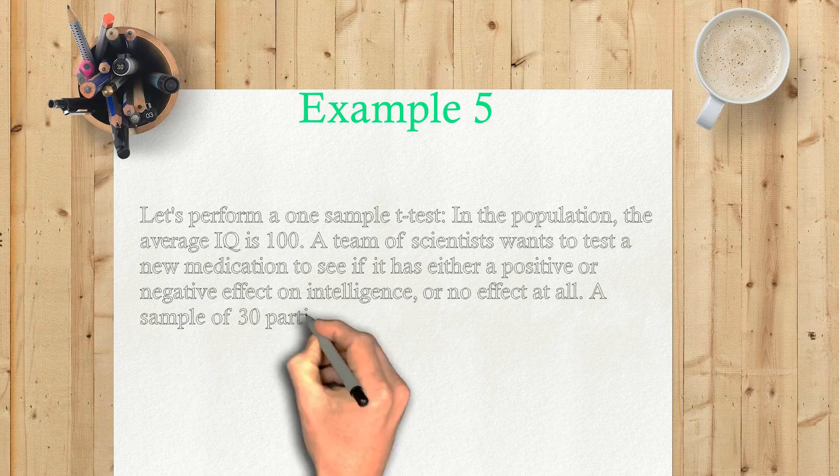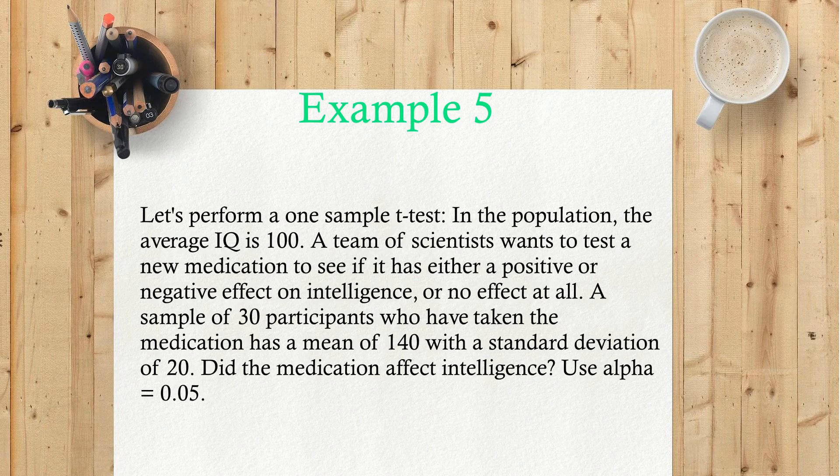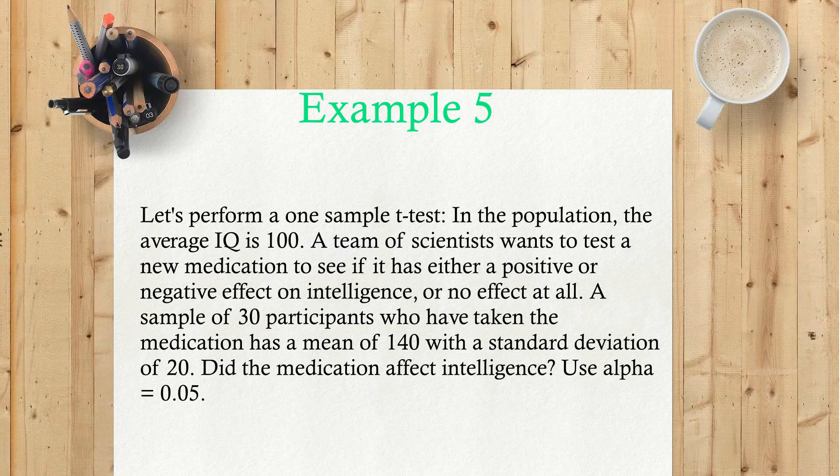Example 5: Let's perform a one sample t-test. In the population the average IQ is 100. A team of scientists wants to test a new medication to see if it has either a positive or negative effect on intelligence, or no effect at all. A sample of 30 participants who have taken the medication has a mean of 140 with a standard deviation of 20. Did the medication affect intelligence? Use α equals 0.05.